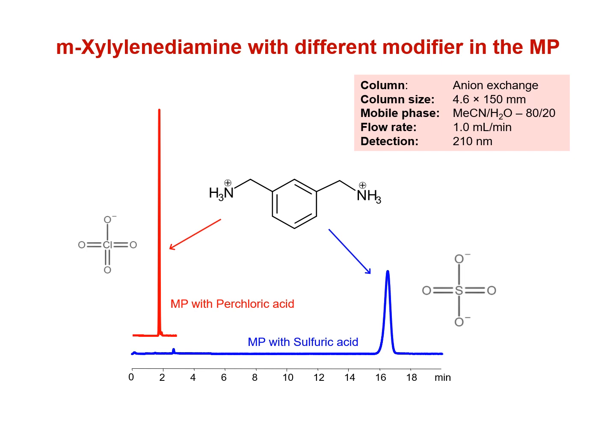It seems that there are three requirements for this new technique in order for there to be any retention of a charged analyte on a similarly charged column. First, the mobile phase has to have a high non-aqueous concentration. Second, the mobile phase should have a double-charged ionic component. And third, the charge of the ionic component should be opposite to that of the analyte and the stationary phase.